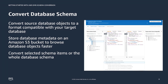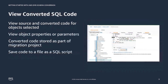If the schema item you choose depends on a parent item, DMS Schema Conversion also generates the schema for that parent item. For example, when you choose a table to convert, it creates the converted table and the database schema that the table is in. After converting source database objects, you can select an object in the left panel to view the source and converted code for that object, as well as its properties or parameters. DMS Schema Conversion automatically stores the converted code as part of your migration project but does not apply changes to the target database automatically.